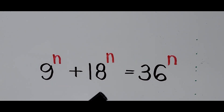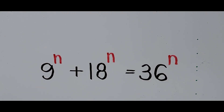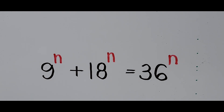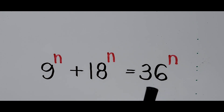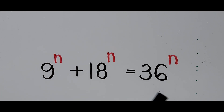If you notice, all the terms in the equation carry the same exponent. Whenever you encounter this kind of exponential equation where each term carries the same exponent, all we have to do is find a common base — or if not, we'll divide the whole equation by any of these terms. The bases are 9, 18, and 36, so the best way to solve for n is to divide the equation by any one of those terms: 9^n, 18^n, or 36^n.